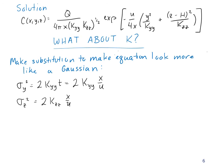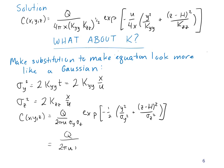Making that substitution, we get: C(x,y,z) = Q/(2πuσ_y σ_z) × exp[-(1/2)(y²/σ_y² + (z-h)²/σ_z²)].